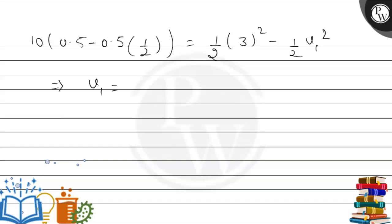Solving this equation, we calculate the value of V1, which becomes 2 m per second. So this is the velocity of the pendulum when it makes an angle of 60 degrees. I hope you will understand this.